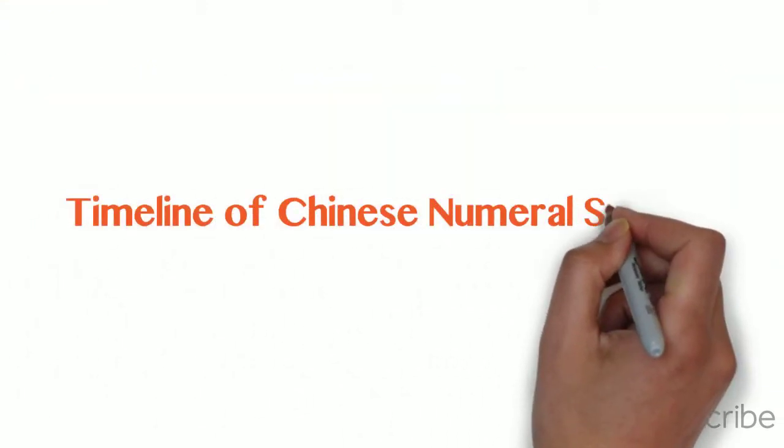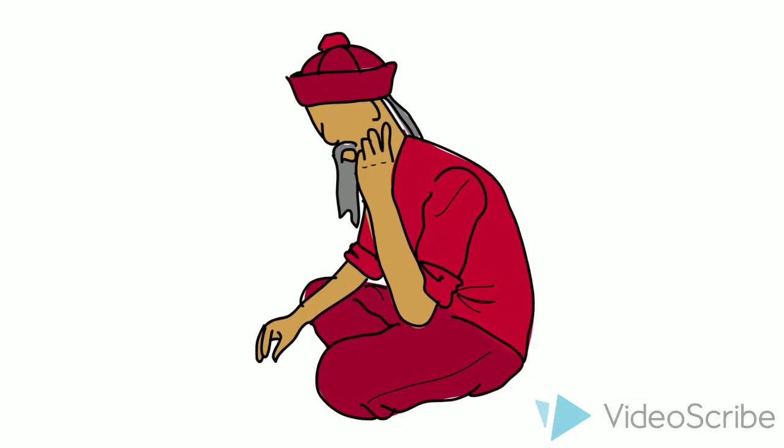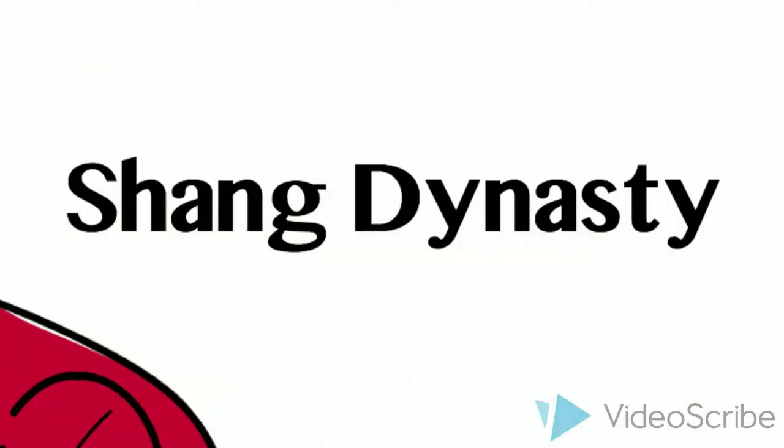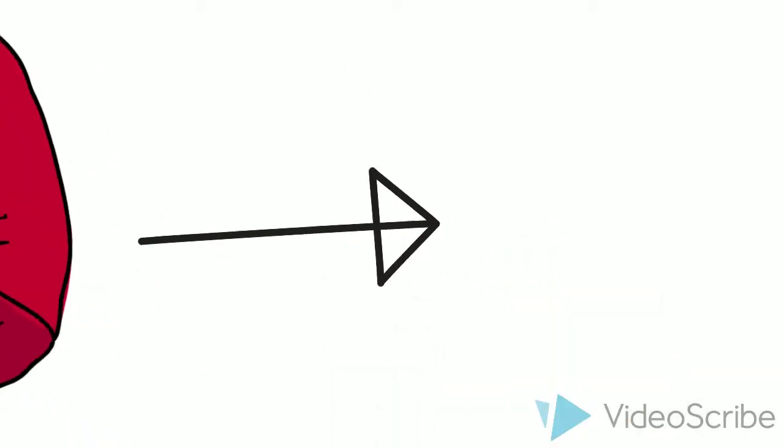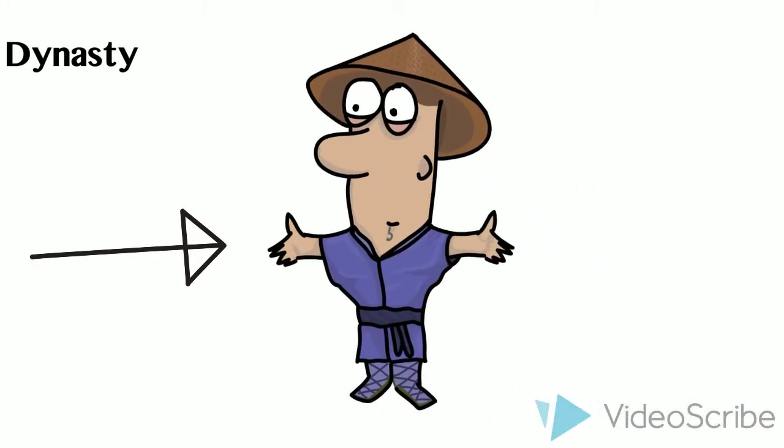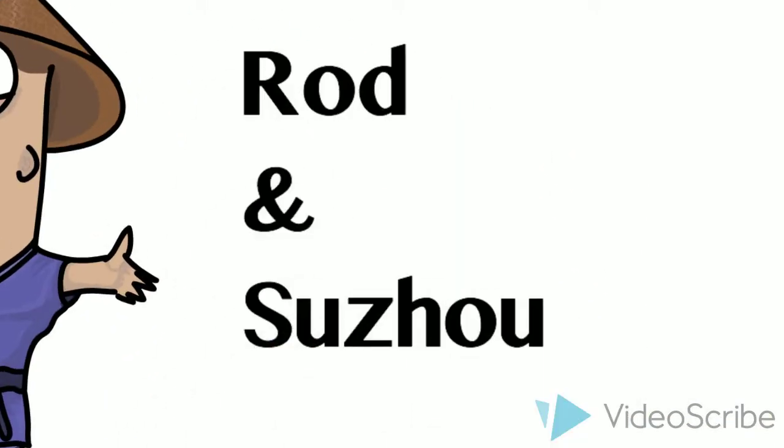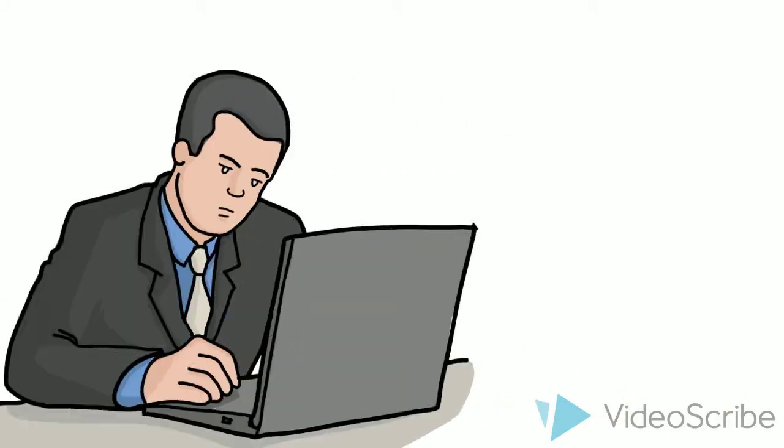The Chinese numeral system's history consists of four main systems: the Shang Dynasty number system, the Rod number system, the Suzhou number system, and finally the modern number system which we know today.